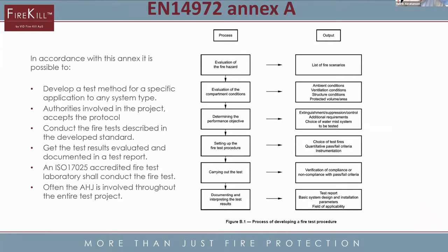What happens if you don't have a standard covering your application? Then you can use Annex A, which is basically how to develop a fire test procedure. This can be done as a cooperation between AHJs, test facilities, ISO 17025 accredited laboratories, owners, manufacturers, etc. If you evaluate the fire hazard, you will have a list of fire scenarios; you evaluate the compartment conditions like ventilation, structural conditions, volumes, and areas; you determine the performance objective — do you want extinguishment, suppression, or control — then you set up the fire test procedures.